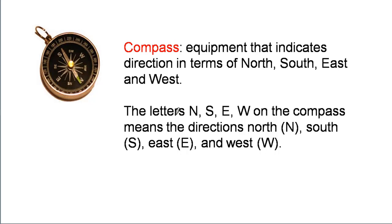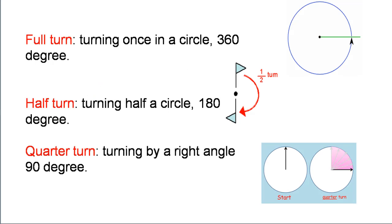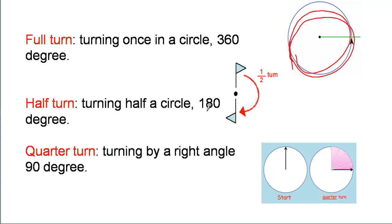The letters N, S, E and W on the compass mean the directions north, south, east and west. Full turn means turning once in a circle — 360 degrees. This is a full turn. Half turn means turning half a circle — 180 degrees. This is a half turn. Quarter turn means turning by a right angle — 90 degrees. This is a quarter turn.